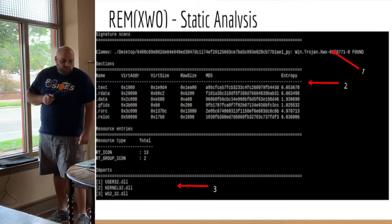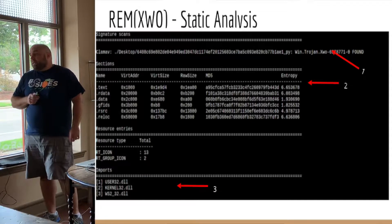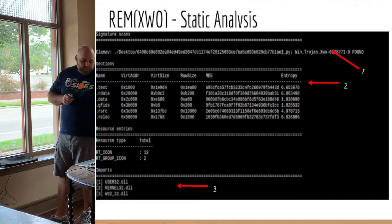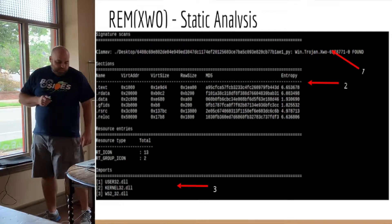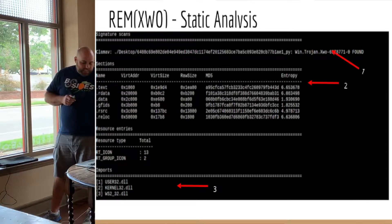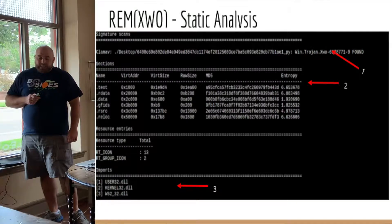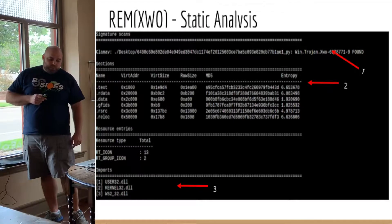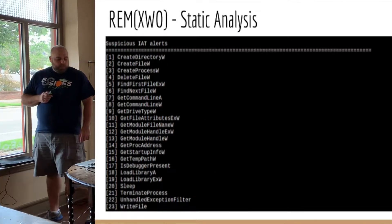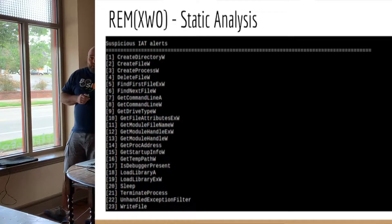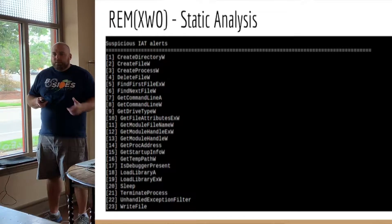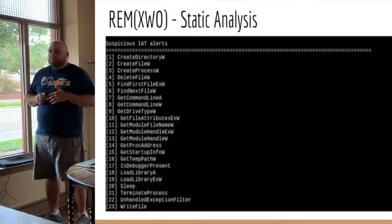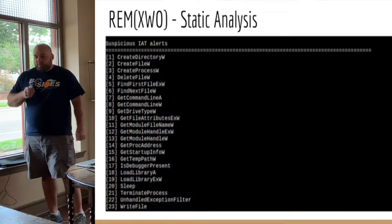We also get what the API calls are — including an additional library that wasn't identified by our other earlier tools. We also get a list of function calls that are typically associated with malware — tools trying to empower us and speed up the process. Should we care about this file? These are things we can now start searching on — what do these function calls do, and why is the tool alerting us that these exist in the sample?